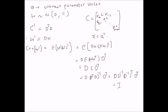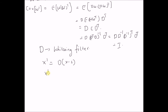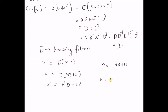Therefore, by using the transformation D, we can whiten the noise and apply the standard minimum variance estimator — D acts as a whitening filter. Applying the same transformation to the observations gives X' = D(X − S), where S is the known signal component. Using the model, X' = D(H theta + W), which can be rewritten as X' = H' theta + W', where H' = D H.